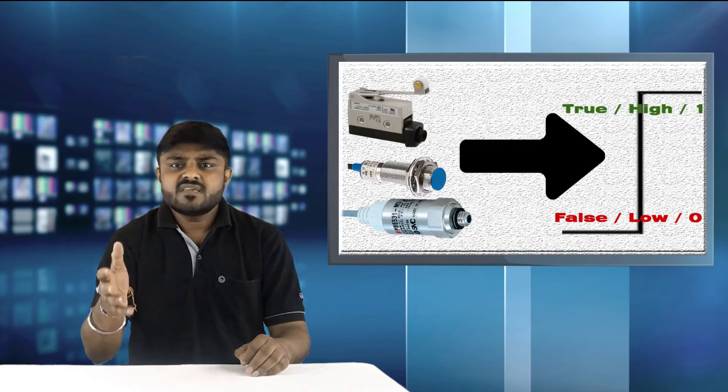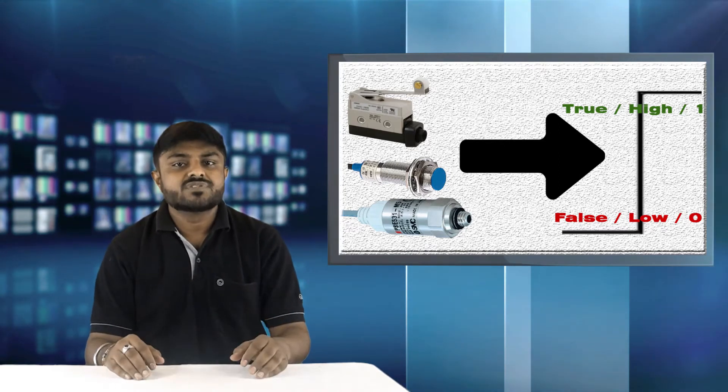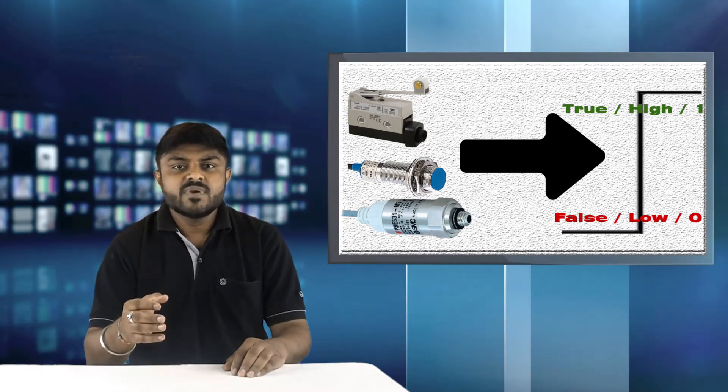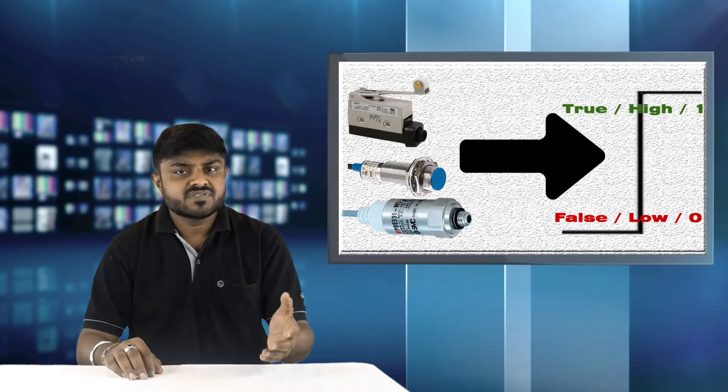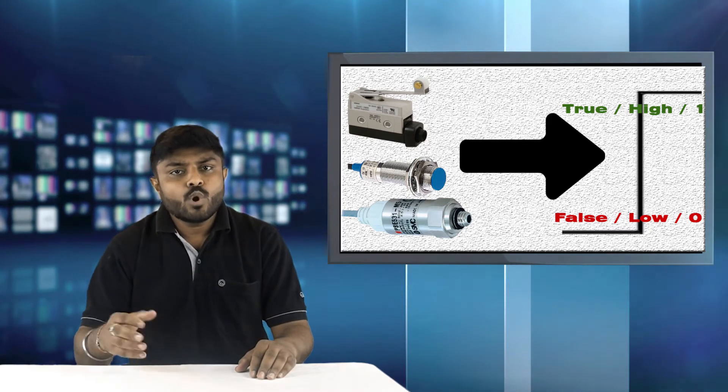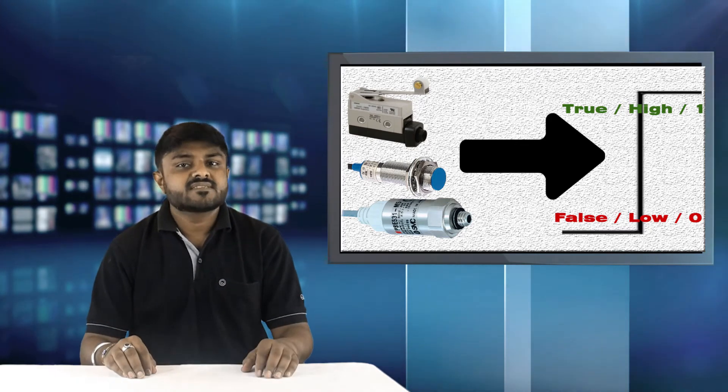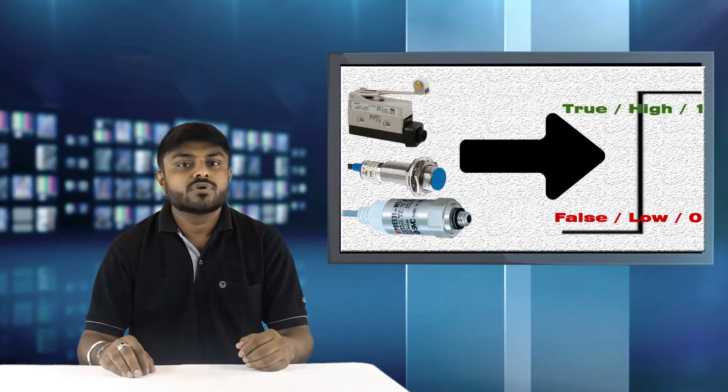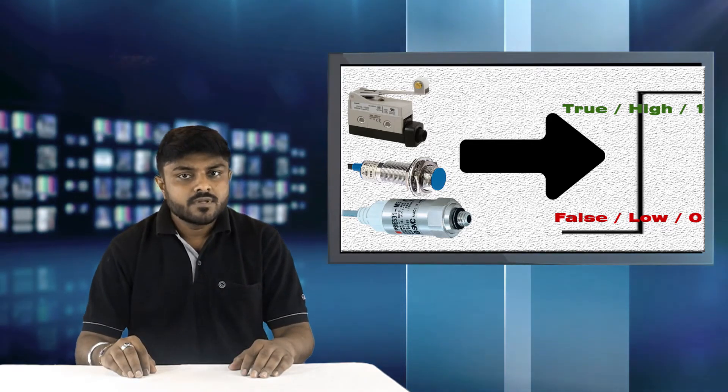For example, if we are working on 24V system, we have digital sensors like limit switch, proximity switch, pressure switch or flow switch. The sensor output will have only two states. If sensor is sensed, its normally open contact will give 24V with respect to ground.